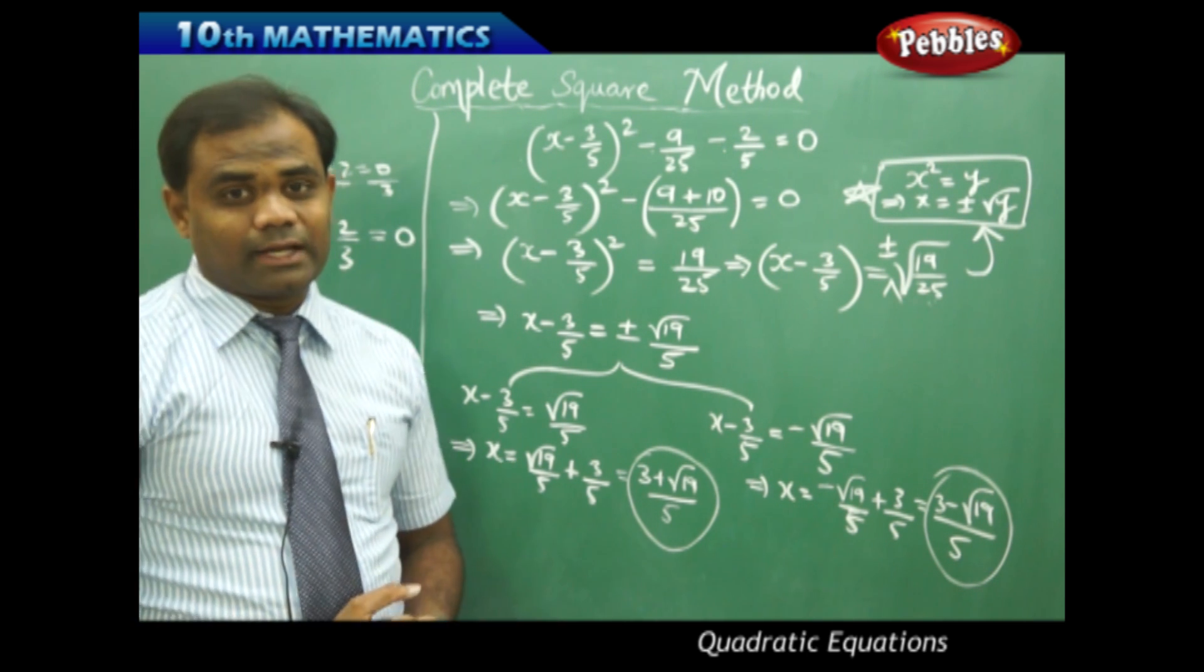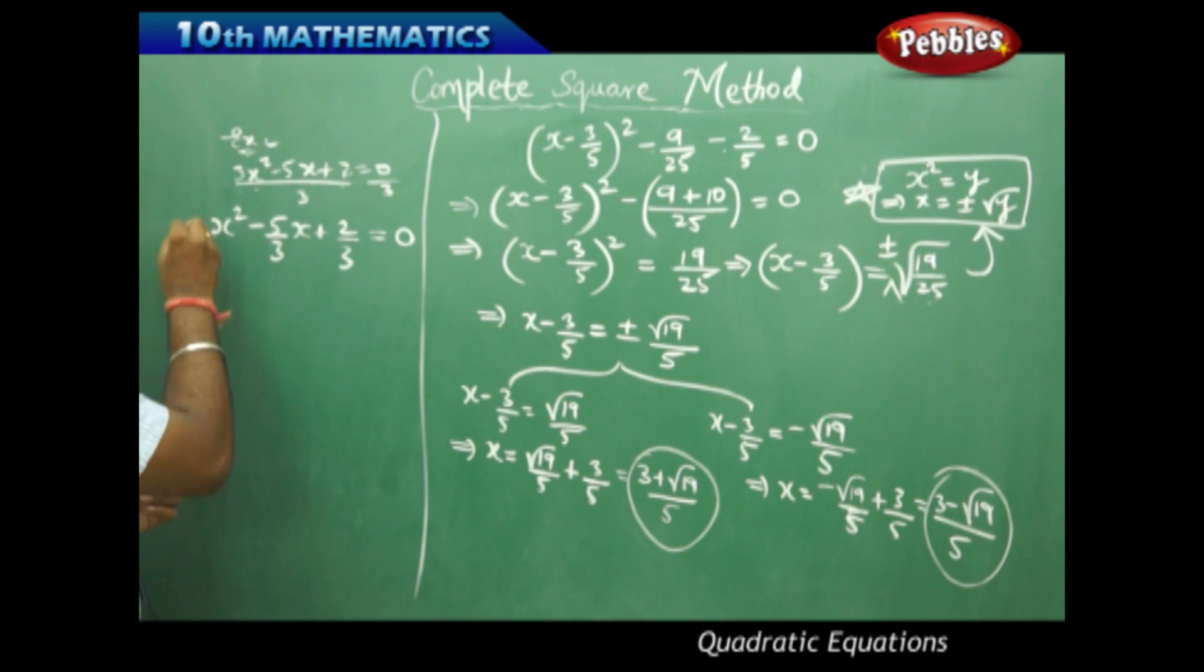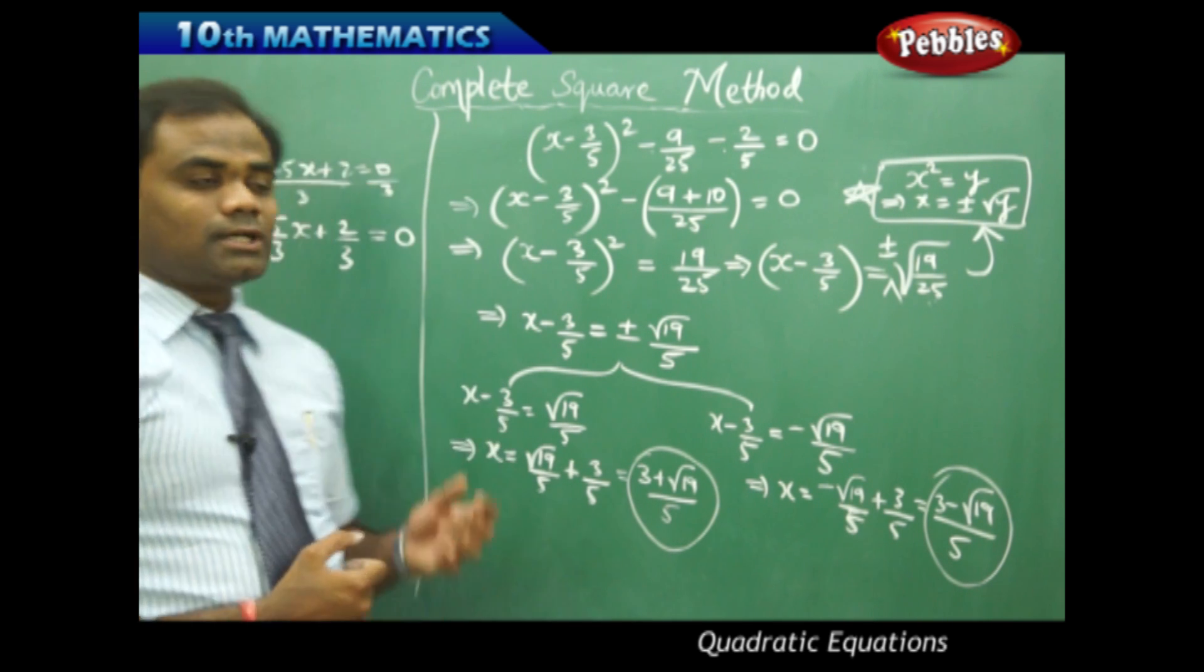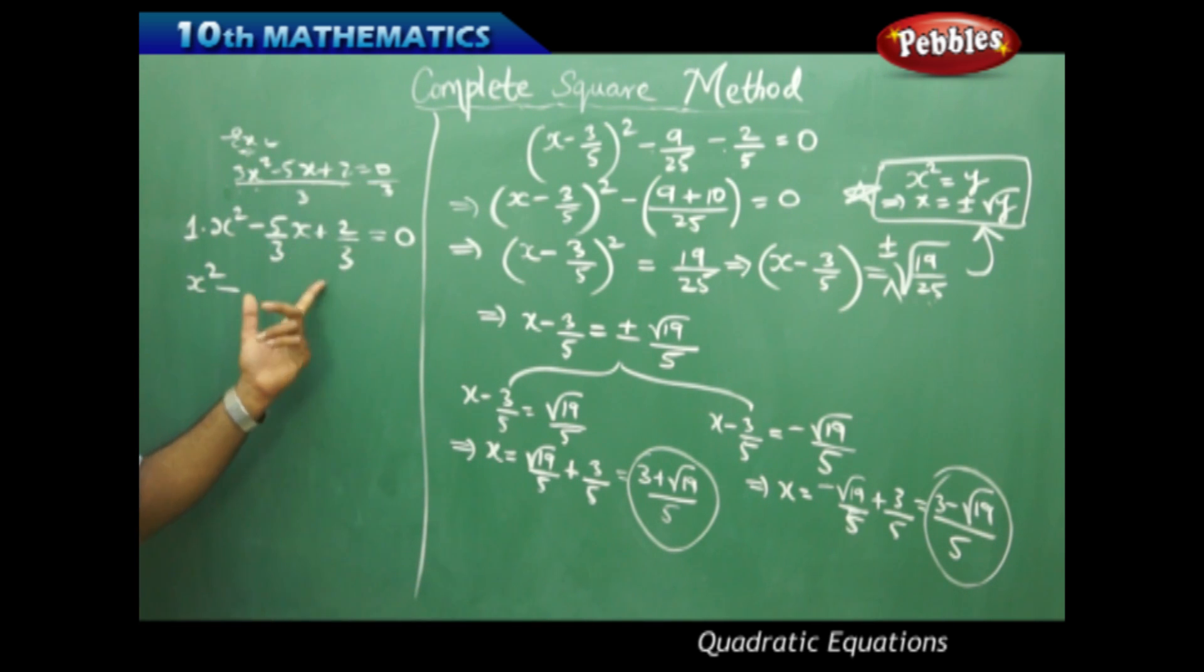This is the quadratic equation reduced with coefficient of x² equal to 1. But here as I observe this is in the form of a² but I don't have 2ab. There is no term 2 multiplied to this. Therefore I need 2. So what do I do?